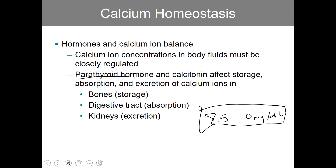Parathyroid hormone and calcitonin are the two antagonistic hormones that are used. By antagonism, I mean that one of these hormones will increase calcium while the other will decrease, so they're antagonists to one another. These two hormones affect the storage of calcium maintained by the bones, the absorption of calcium within the digestive tract, as well as the excretion of calcium in the kidneys.